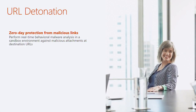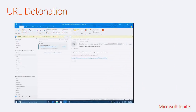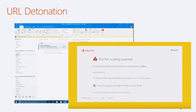URL detonation is another capability recently added. When we have a URL that points to a file - rather than the payload being sent as an attachment, there's a URL in the message saying go download this file - ATP will follow that link when you click on it, get the file, put it into the sandbox detonation chamber, run it to see what happens, and potentially prevent the user from getting to it. So say you've got an Outlook client with a link to a PDF file. You click on it and get a message in your browser saying the link is being scanned. ATP will take a minute or two, then either let you get the file or block you completely depending on the result.